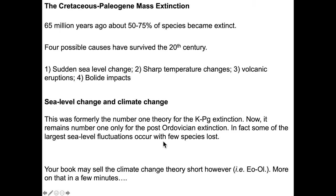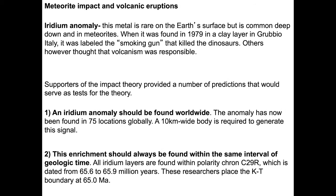Sea level change used to be the number one theory because it's the easiest to get your head around. It remains the number one cause only for the Hirnantian extinction event that we just talked about. When you look at it, the largest sea level fluctuations often occur with few species lost — sea level rises, shallow water organisms move inland; when sea level falls, shallow water organisms move seaward. Your book talks about climate change theory in kind of a dismissive way.